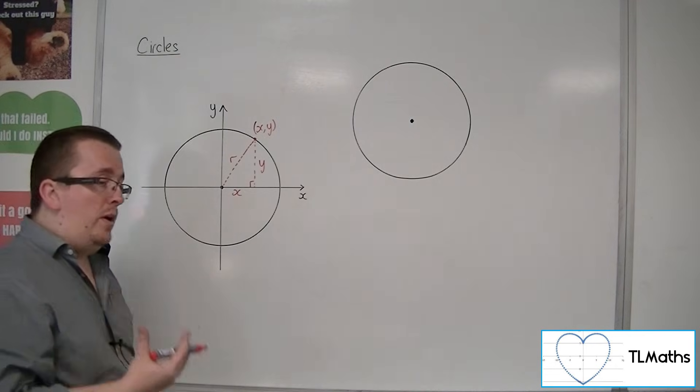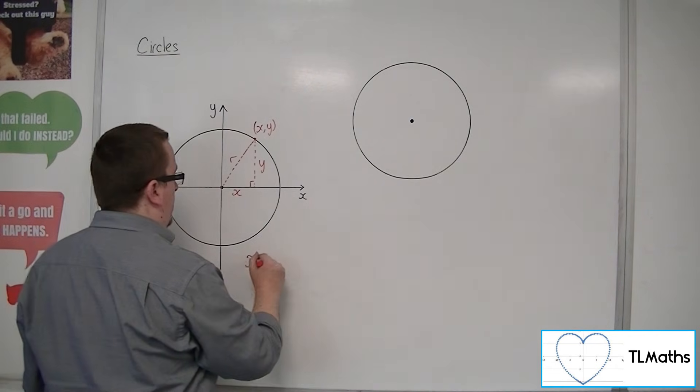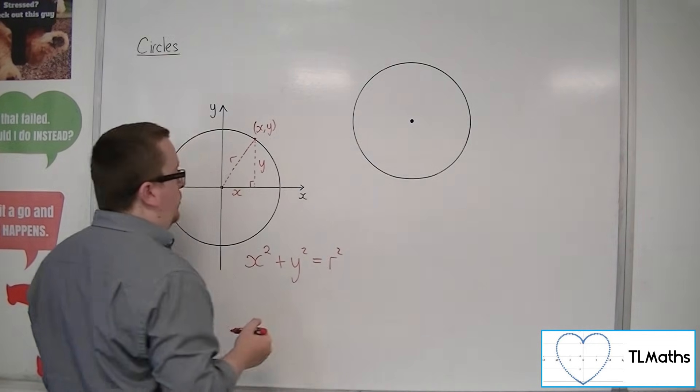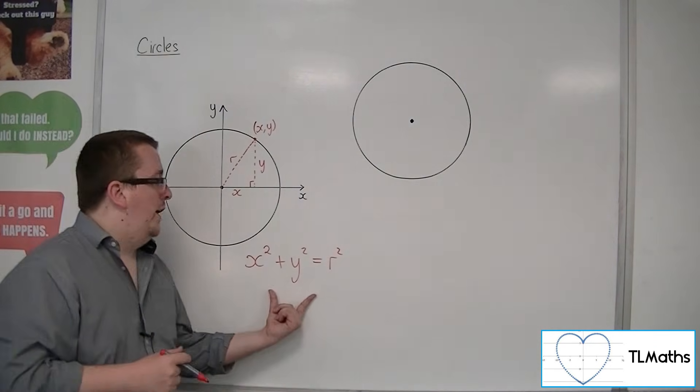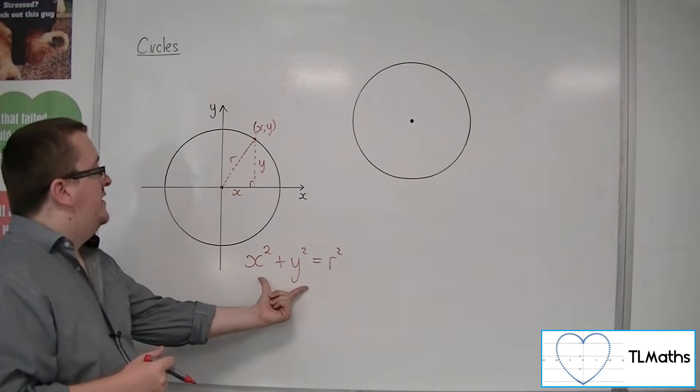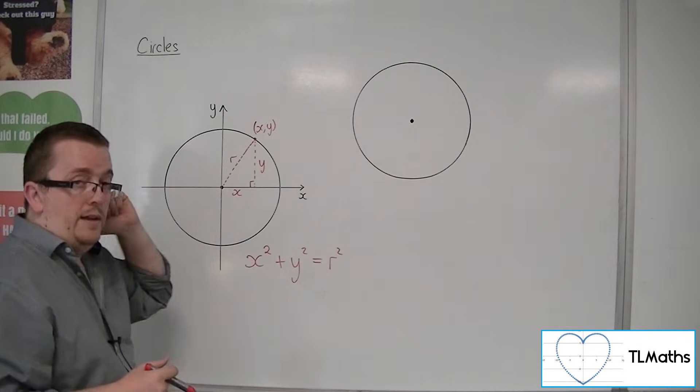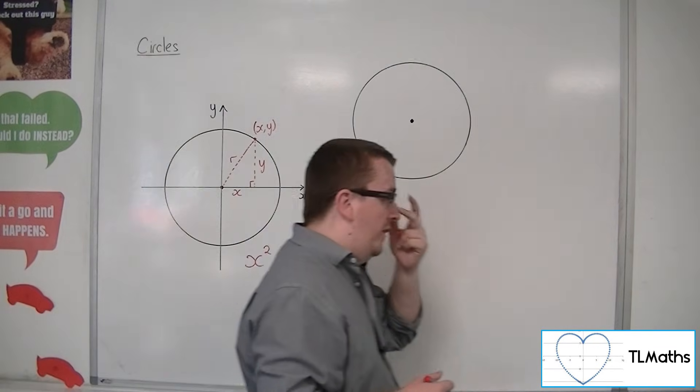So using Pythagoras' theorem, we can say that x² + y² = r². And this equation is telling you what that curve is. This is the equation of the curve.